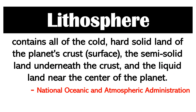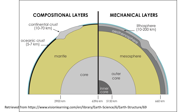The next system of our planet is the lithosphere. It contains all of the cold, hard, solid land of the planet's crust, the semi-solid land underneath the crust, and the liquid land near the center of the planet. There are two classifications of the lithosphere — based on composition and physical characteristics. The compositional layers are classified based on the materials they are made of, and the mechanical layers are classified by the way they behave.